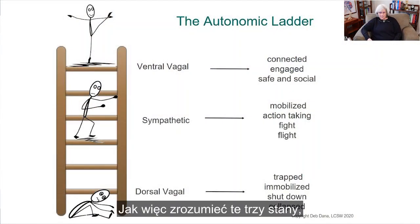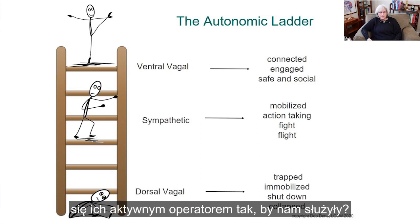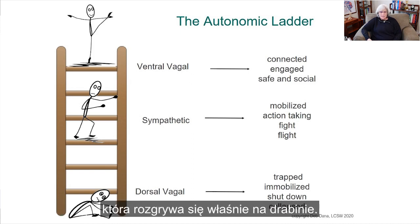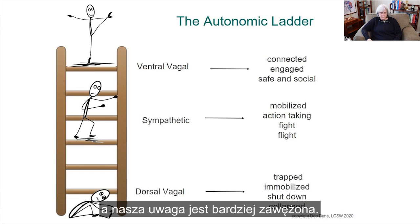So what do we do with those three states? How do we understand them so we can use them, become introduced to them, become friends with them, and then become an active operator of those states? We put them on a ladder — the autonomic ladder — where we see the hierarchy playing out. Ventral is at the top. Sympathetic is in the middle of the ladder, where there are fewer options and our focus is more narrow. And dorsal is at the bottom of the ladder.